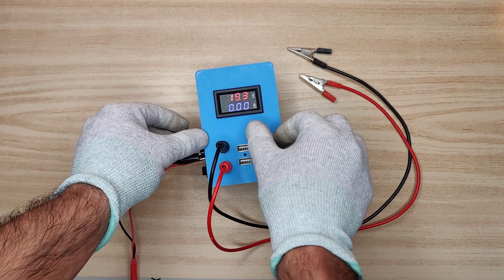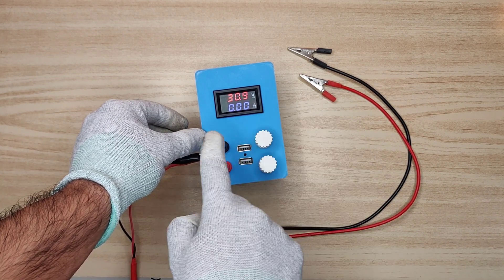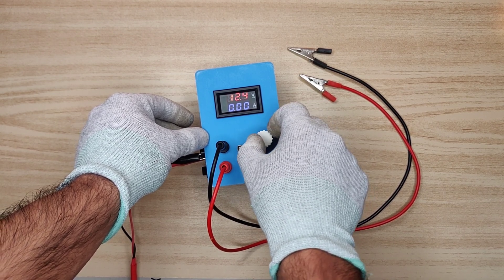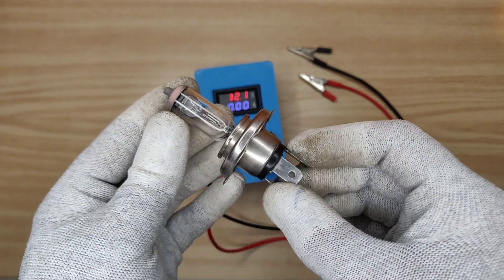You can adjust voltage output from about 1 to 30 volts. For testing let's set output on 12.1 volts. I used this 12 volt bulb as load.